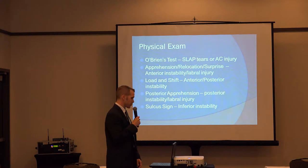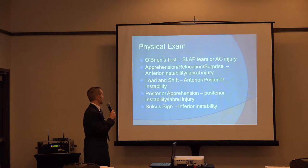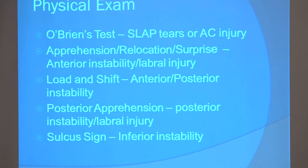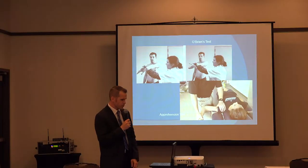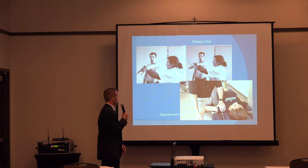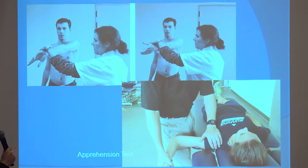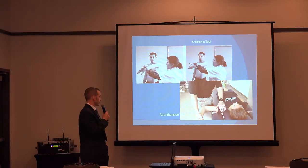On physical examination, we're typically going to do a full examination of the shoulder. The actual tests we want for labral tears are going to be the O'Brien's test, the apprehension, relocation and surprise test, the load and shift test, the posterior apprehension test, and the sulcus sign. With the O'Brien's test, that really looks at the superior labrum — typically you'll have pain with one maneuver and the other alleviates the pain. That can be referred from the superior labrum or a SLAP tear, but we can also see it with AC joint pathology.